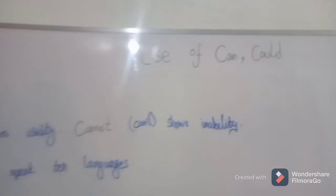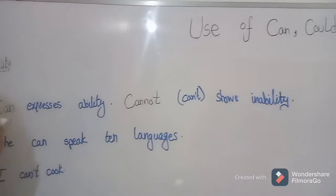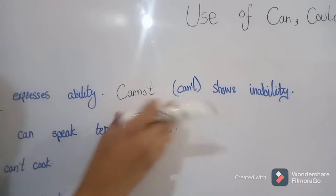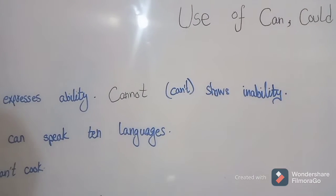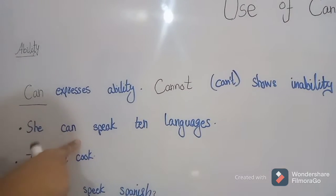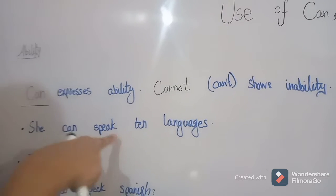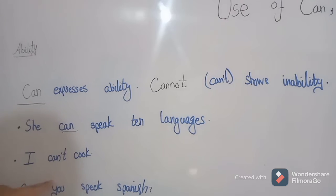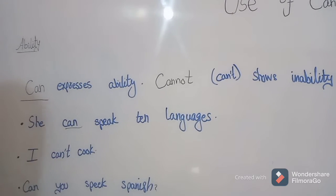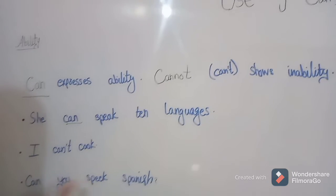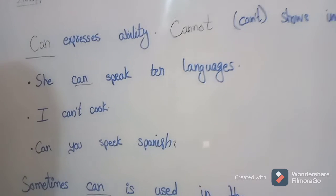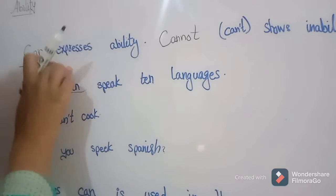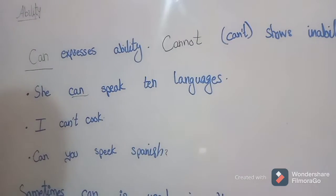First, let's talk about ability. Can expresses ability and cannot — which we also say can't — shows inability. For example: she can speak 10 languages, meaning she has the ability to speak 10 languages. I can't cook — that shows inability. Can you speak Spanish? Always remember that can expresses ability and cannot shows inability.